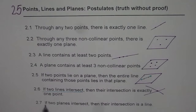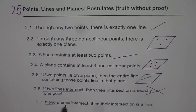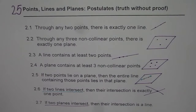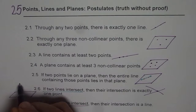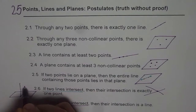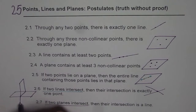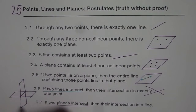Postulate 2.7: If two planes intersect, their intersection is a line. Note that two planes may sometimes not intersect at all — that is critical to understand. But when they do intersect, as shown here with one plane cutting through another, their intersection is always a straight line.